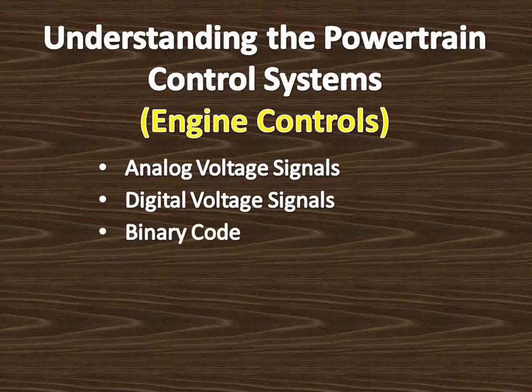A numeric value may be assigned to digital signals. For example, an off or low digital signal may be given a value of zero, and an on or high digital signal may be given a value of one. This assignment of numeric values to digital signals is called binary coding. The word binary means two values, and in the binary coding system the two values are zero and one.